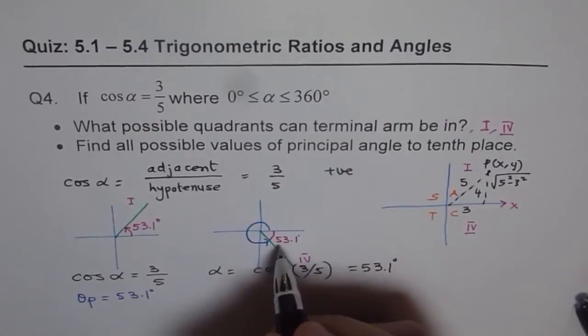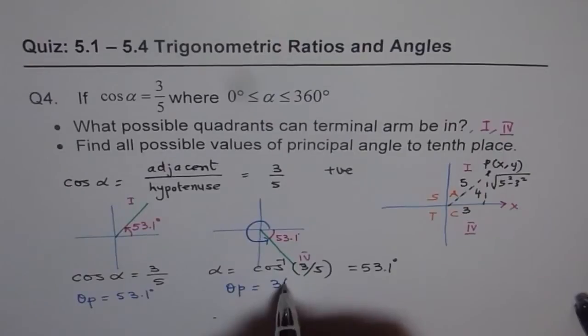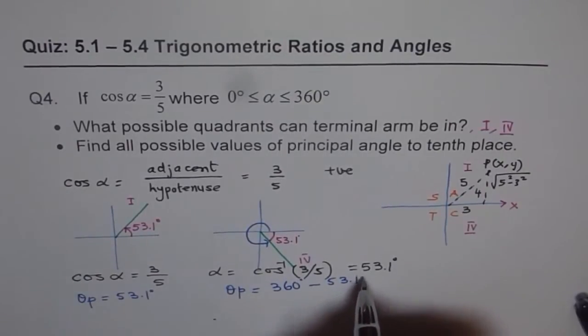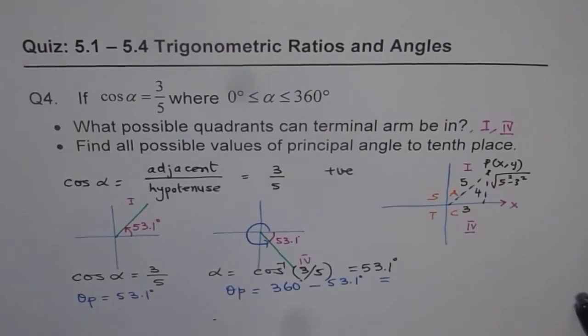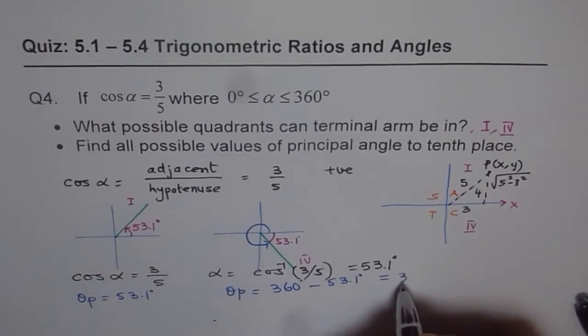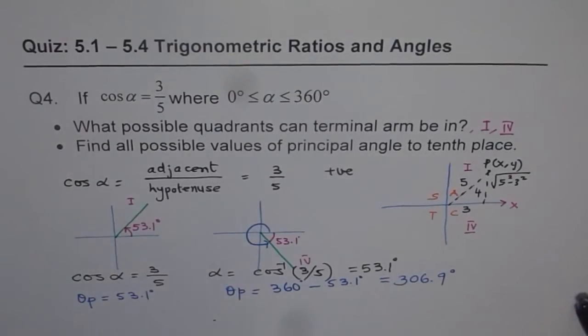That is 360 minus 53.1. So theta p, in this case, is equal to 360 degrees minus 53.1 degrees, right? Which is equal to, you can again use calculator, figure this out, 360 minus 53.1, gives us 306.9, so we get 306.9 degrees, right? So that is how we can get the principal angle in the given situation.